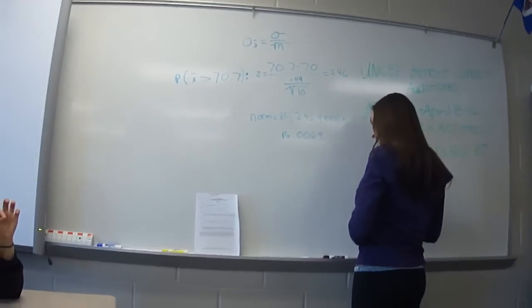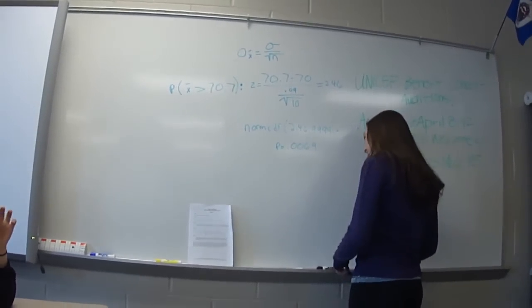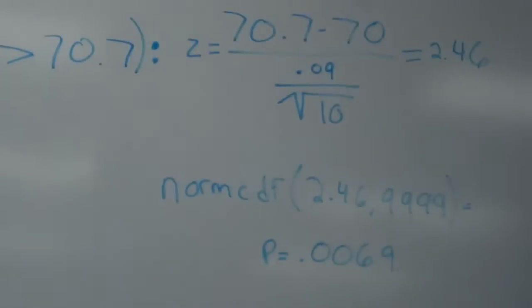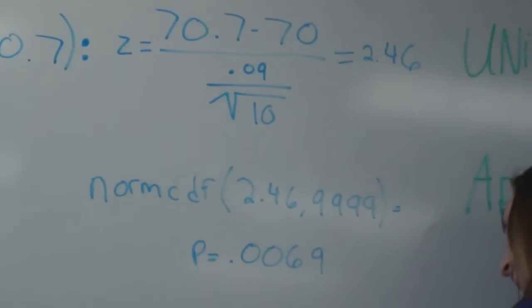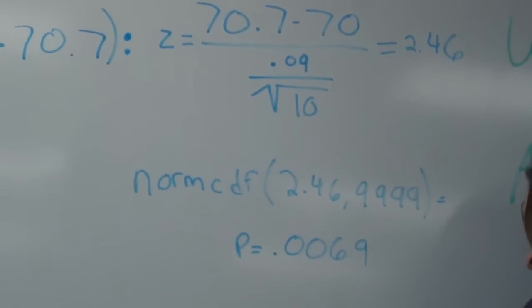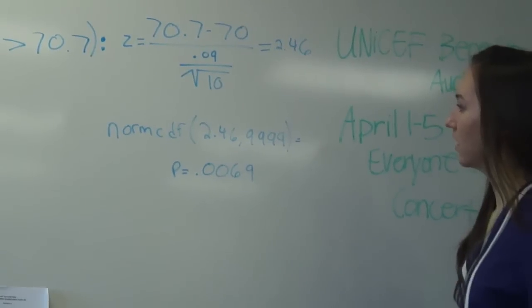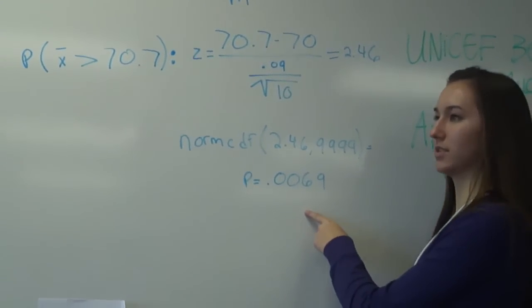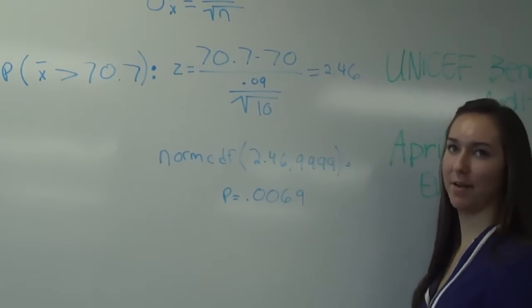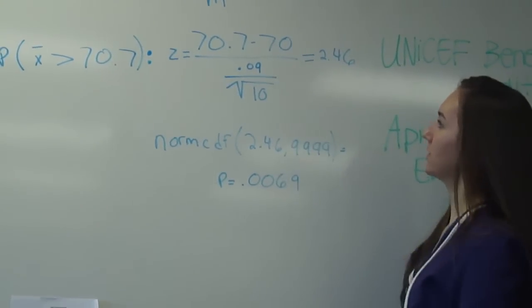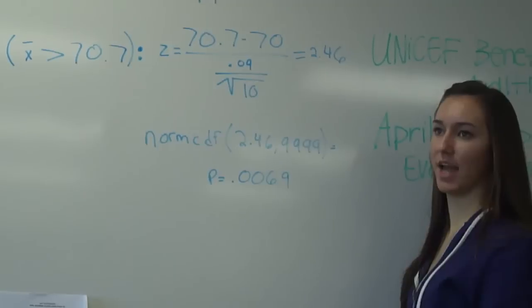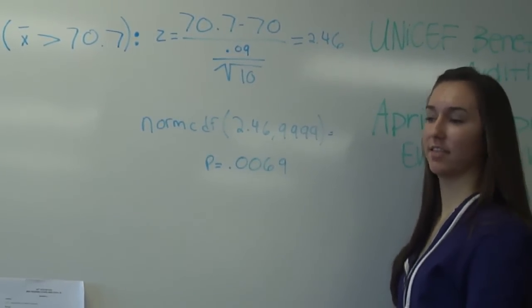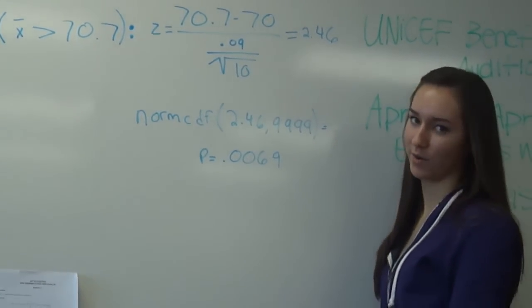Now, this is a really small number, so if a random sample of 10 cars had a mean ore weight of 70.7 tons, we would suspect that the loading equipment was malfunctioning. So, since the p-value for this is only .0069, if we actually did get a mean weight of 70.7 tons or more out of a sample of 10, that would give us significant evidence to say that the filling equipment was not working.